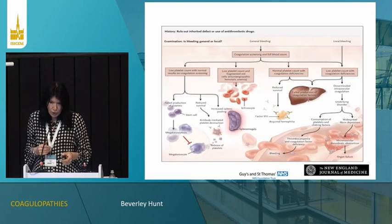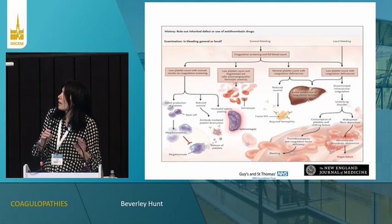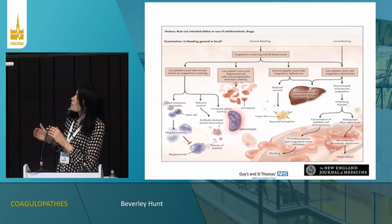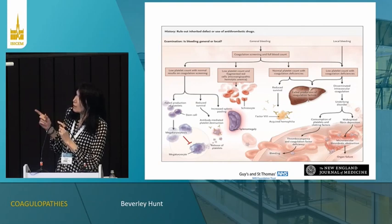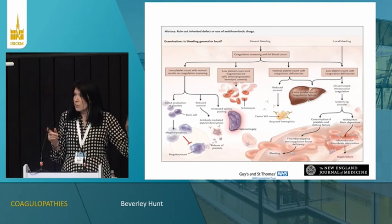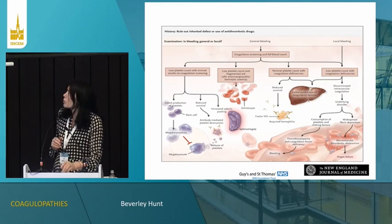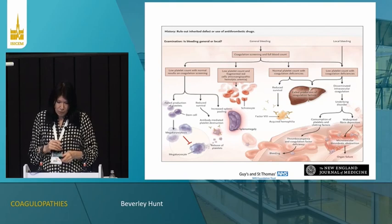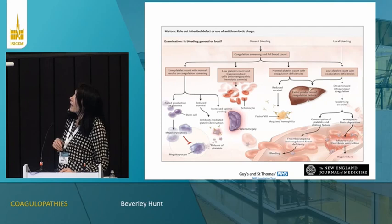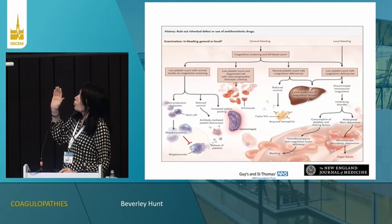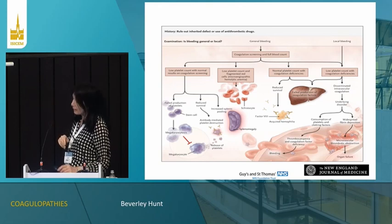Let's move on to a general approach. This framework, published in the New England Journal, covers the key categories. Excluding congenital problems such as haemophilia or congenital thrombocytopenia, and excluding patients on anticoagulants, bleeding can occur generally and locally. We have those with an isolated low platelet count, those with a low platelet count and fragmented cells but no clotting problem, and those with either normal or low platelets associated with coagulation abnormalities.